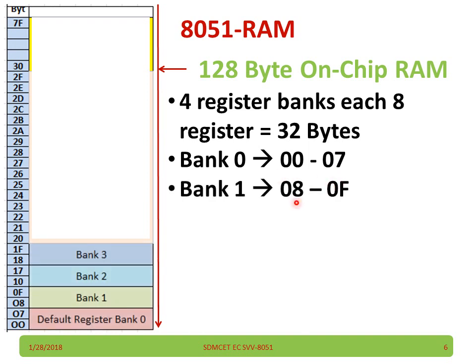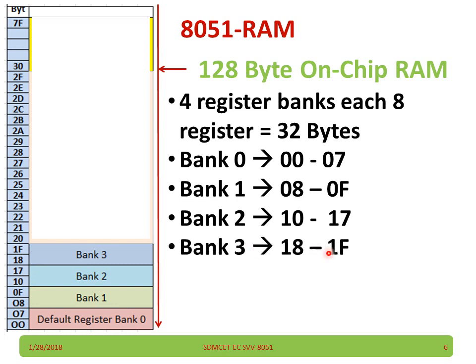Bank 1 address is 08H–0FH. Similarly, bank 2 address is 10H–17H, and bank 3 is 18H–1FH. Each register bank can handle 8 bits.